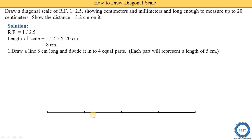We have four parts: first, second, third, and fourth. Each part represents 2 centimeters on the drawing. So one part is 2 centimeters long, and this 2-centimeter line represents an actual distance of 5 centimeters.